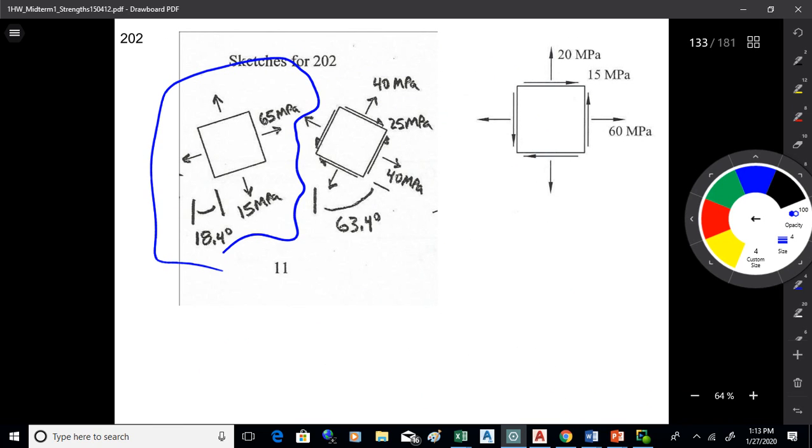So at the 18.4 degrees, you've got 65 megapascals tension. 90 degrees off of that, you've got 15. There's no shear on the principal planes. So the shear on that left-hand sketch is 0. So are we good with that? Doing all right? All right.